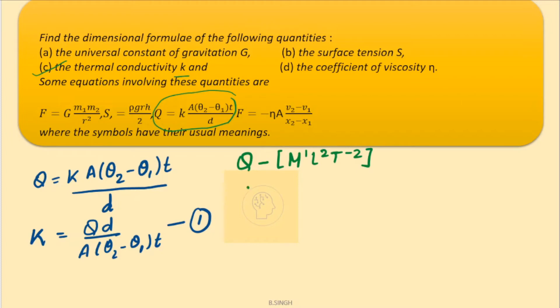d, small d here is separation between the two ends, that is the length. So, length has a dimension l1. A, A is the area. So, area of cross section will have a dimension l square.